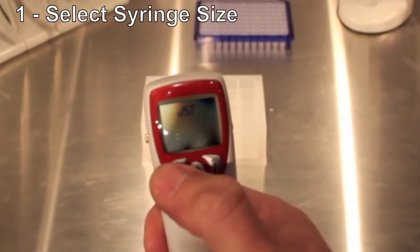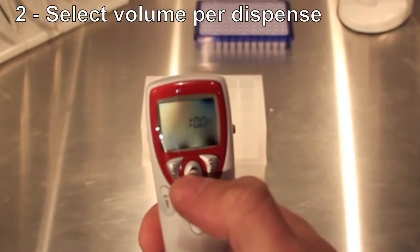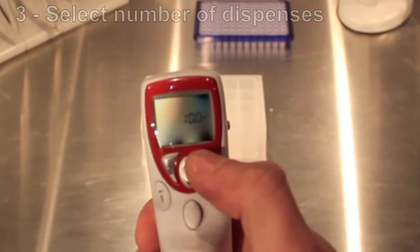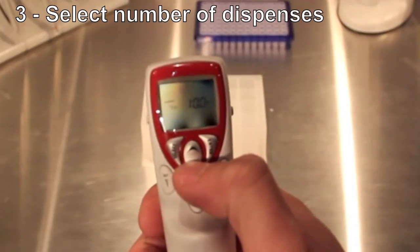The unit is very easy to program. You simply select the syringe size, select the volume per dispense that you want to use, and select the number of dispenses.